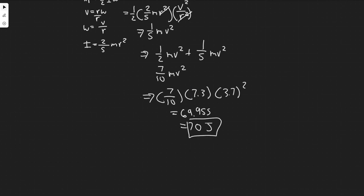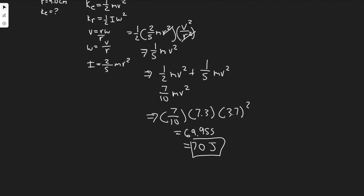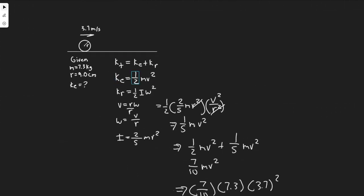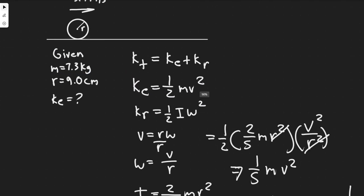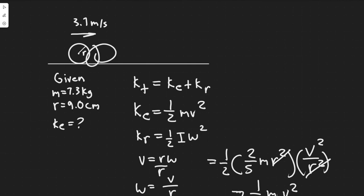Keep in mind what we measure kinetic energy in. We measure it in joules since it's energy. So the total kinetic energy equals 70 joules. The main takeaway from this problem was using the rotational kinetic energy. We had to include that because it's rotating.